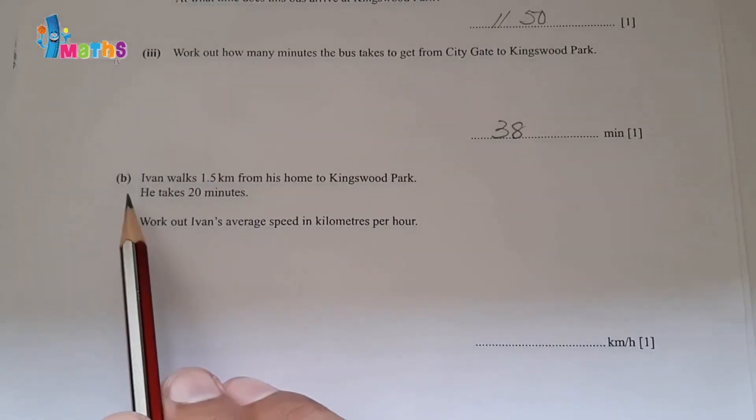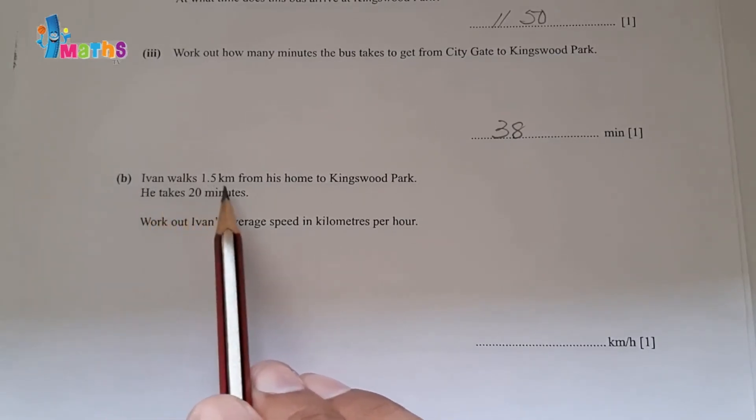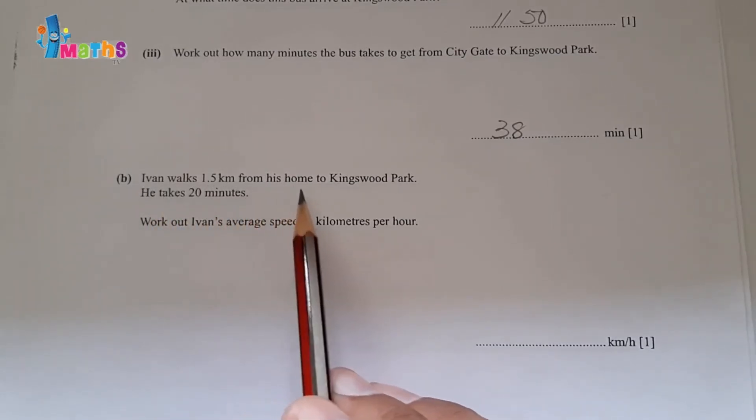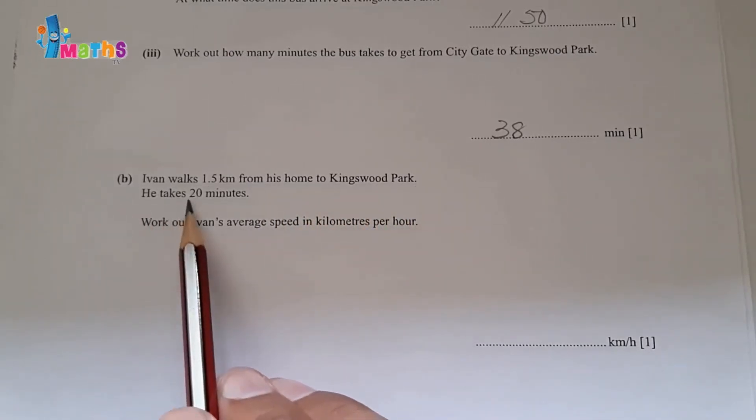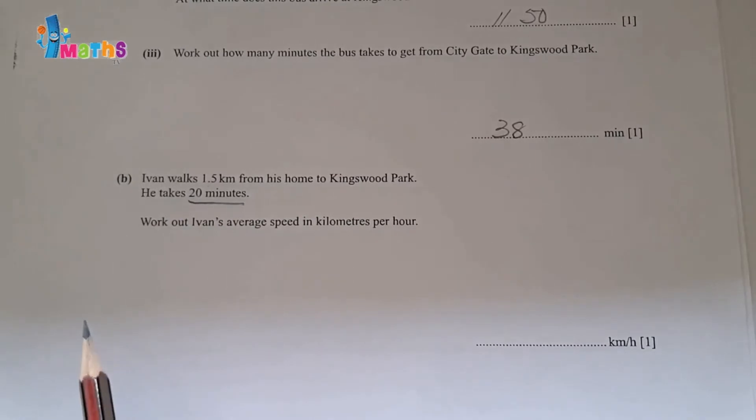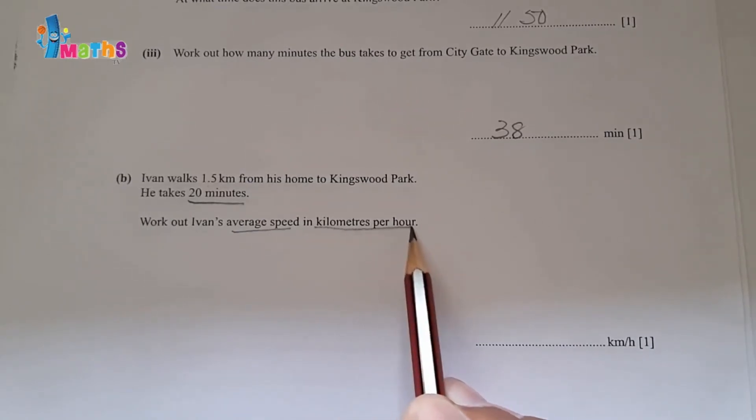Question number 1, part B: Ivan walks 1.5 kilometers from his home to Kingswood Park. He takes 20 minutes. Work out Ivan's average speed in kilometers per hour.